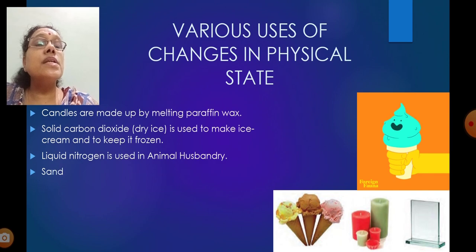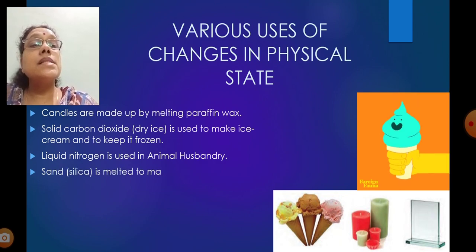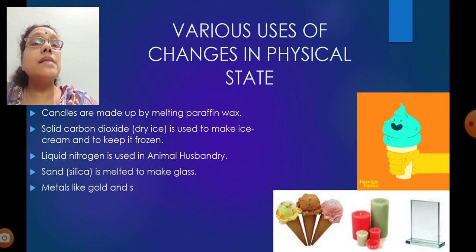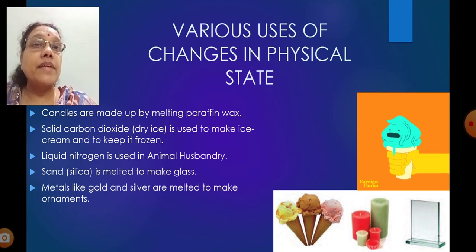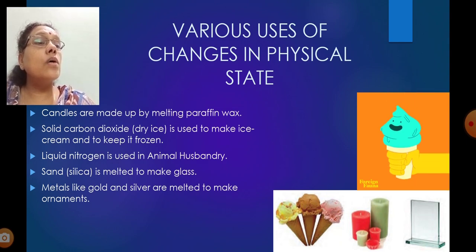Liquid nitrogen is used in animal husbandry. Silica or sand is melted to make glass. Metals like gold and silver are melted to make ornaments. The ornaments which we are wearing in the form of bangles, chain, ring, are made up of gold or silver. They are melting and giving different shapes to these metals. Here in the picture, ice cream is melting, see how, and candle, then one mirror also, which is made from glass.